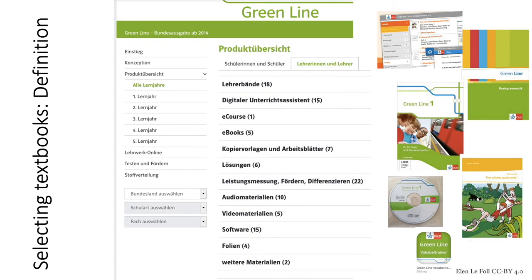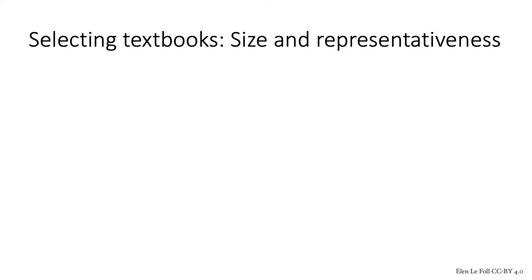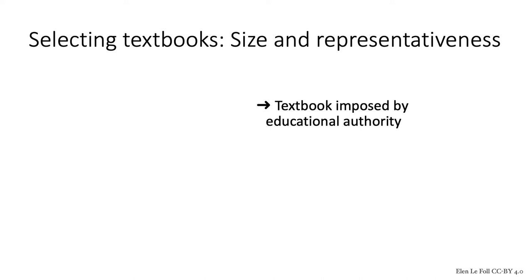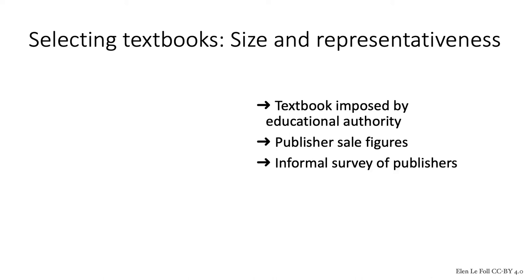Depending on the country of interest, selecting textbook series for a corpus is more or less easy. In some countries, the textbook series are imposed by an educational authority. That's not the case in France, Germany or Spain — the three countries that I was interested in for my corpus. So that means it's necessary to find out which textbooks are most used. One way to do that, if possible, is to look at publisher sale figures. If these are not available, it might be possible to survey the publishers directly, or it may be necessary to ask teachers and students. Another option is to ask large bookstores if they have sale information they're willing to share.